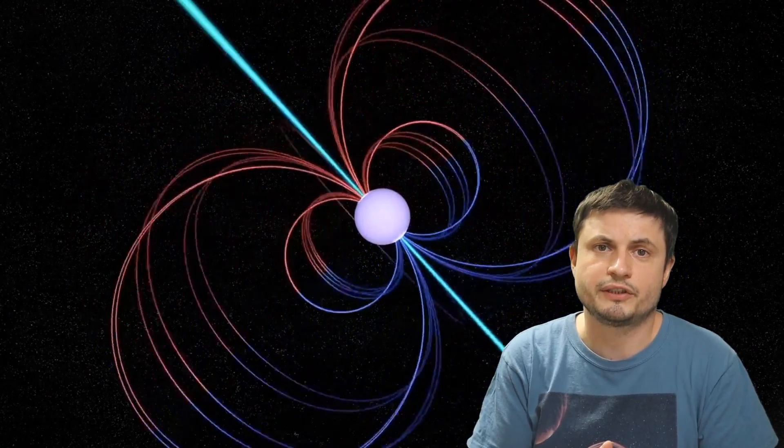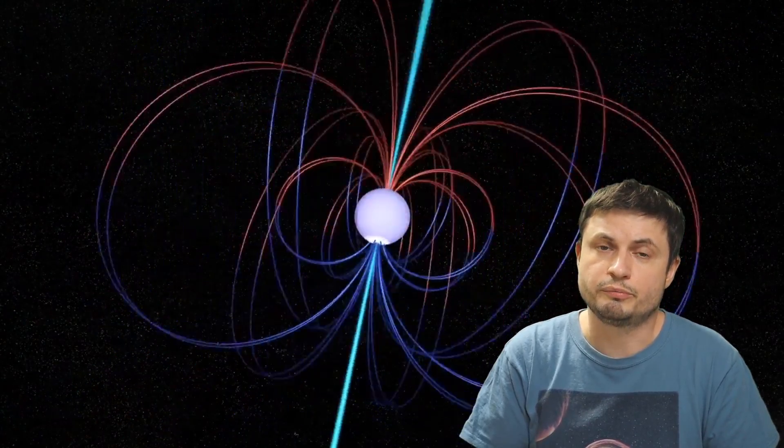Whatever is producing extragalactic FRBs seems to be extremely powerful. But in every other respect, the profile of FRBs we've detected from these magnetars and from other galaxies seem to be almost identical. In other words, some of these extragalactic FRBs could be produced by magnetars that had something very catastrophic happen to them, something that we don't see in our own galaxy just yet.